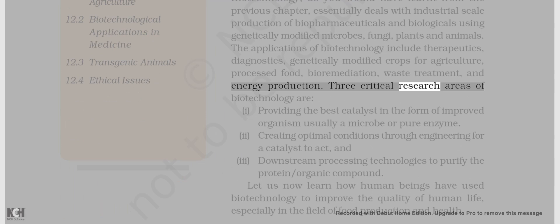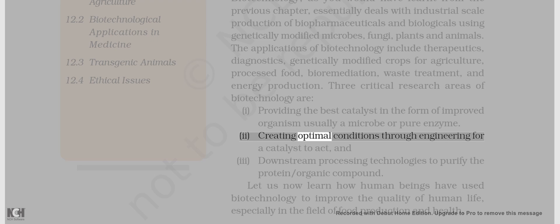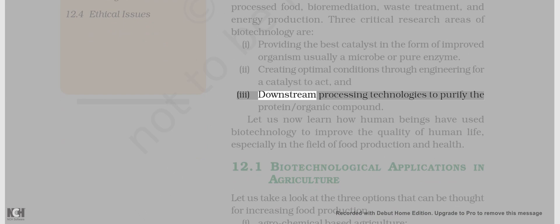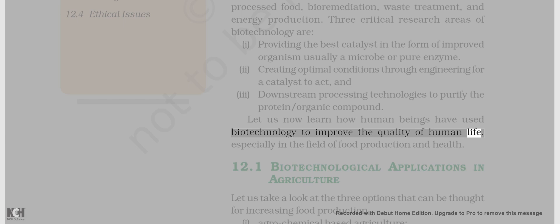Three critical research areas of biotechnology are: 1. Providing the best catalyst in the form of improved organism, usually a microbe or pure enzyme. 2. Creating optimal conditions through engineering for a catalyst to act, and 3. Downstream processing technologies to purify the protein or organic compound. Let us now learn how human beings have used biotechnology to improve the quality of human life, especially in the field of food production and health.